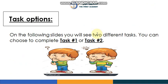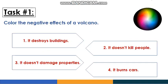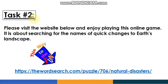Now for task options: on the following slides you will see two different tasks, so you can choose to complete task one or task two. Task one: color the negative effects of a volcano. It destroys buildings — yes, correct. It doesn't kill people — wrong, volcanoes do kill people. It doesn't damage properties — wrong, it does damage properties. It burns crops — yes. You must only color options one and four. Task two: visit the website below and enjoy playing an online game about searching for the names of quick changes to earth's landscape.